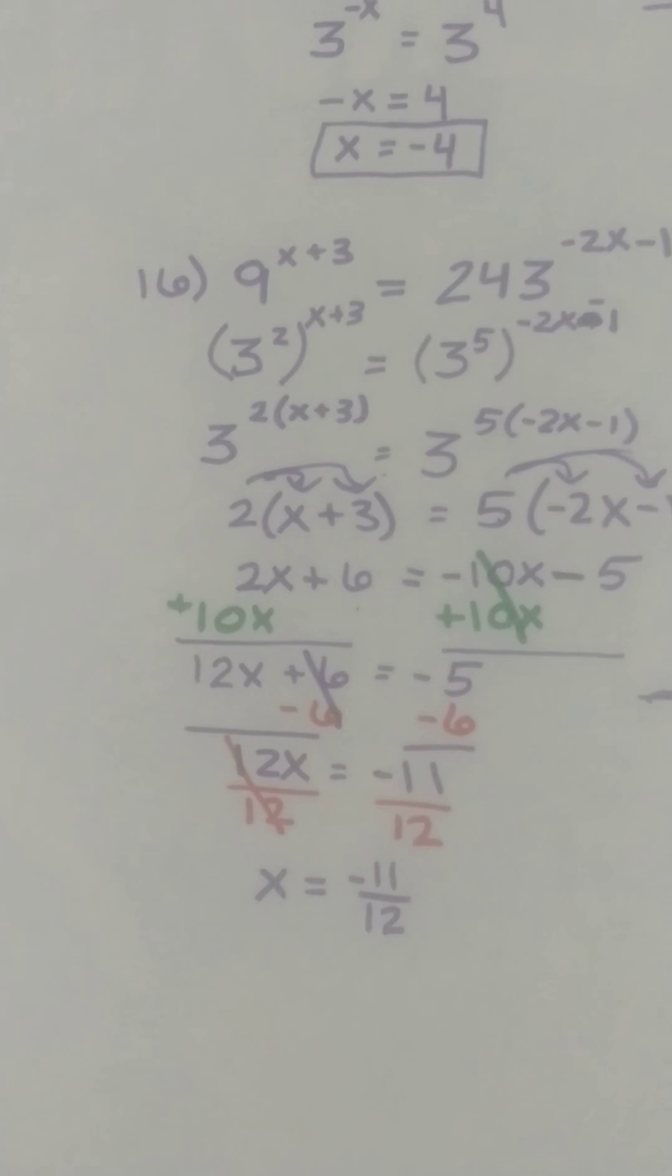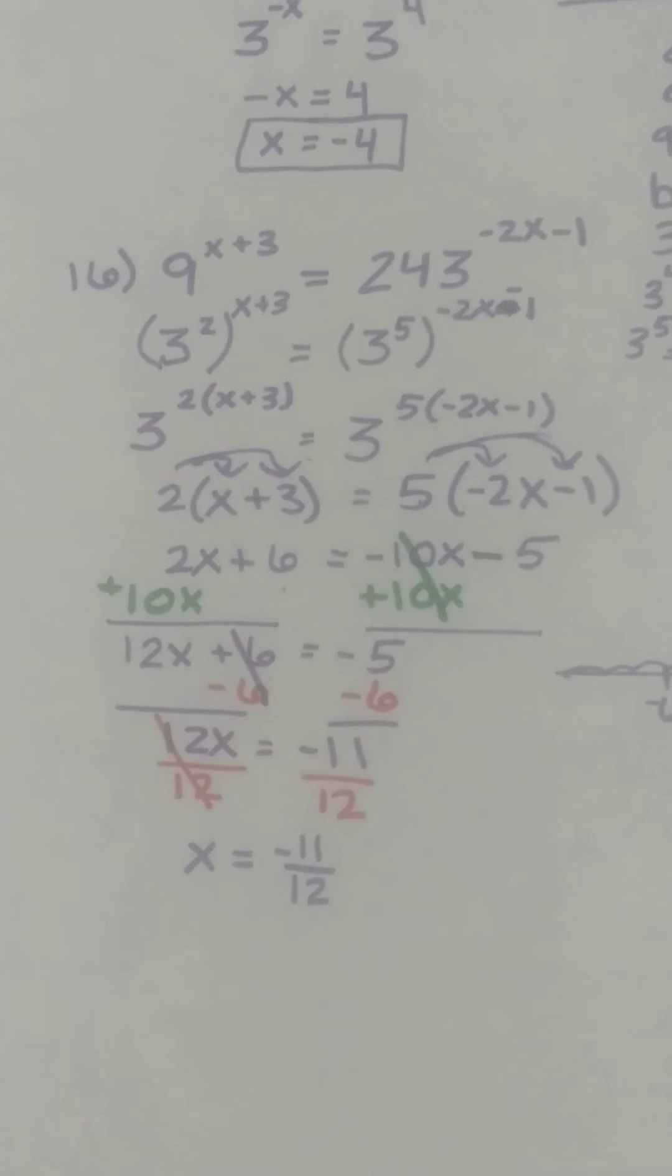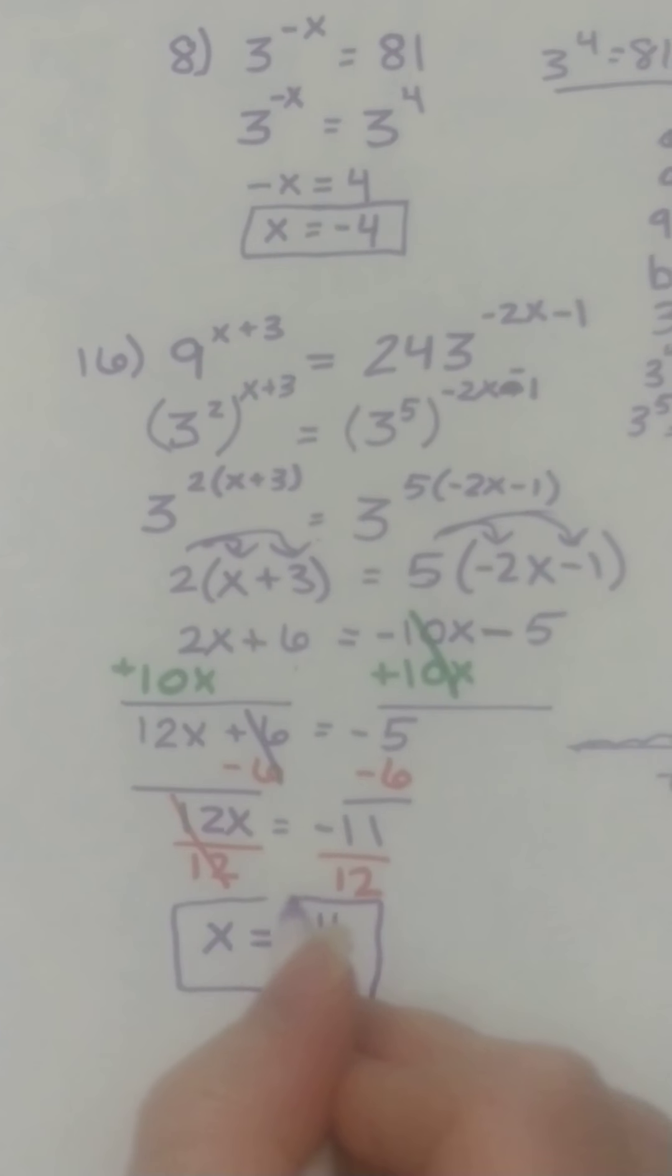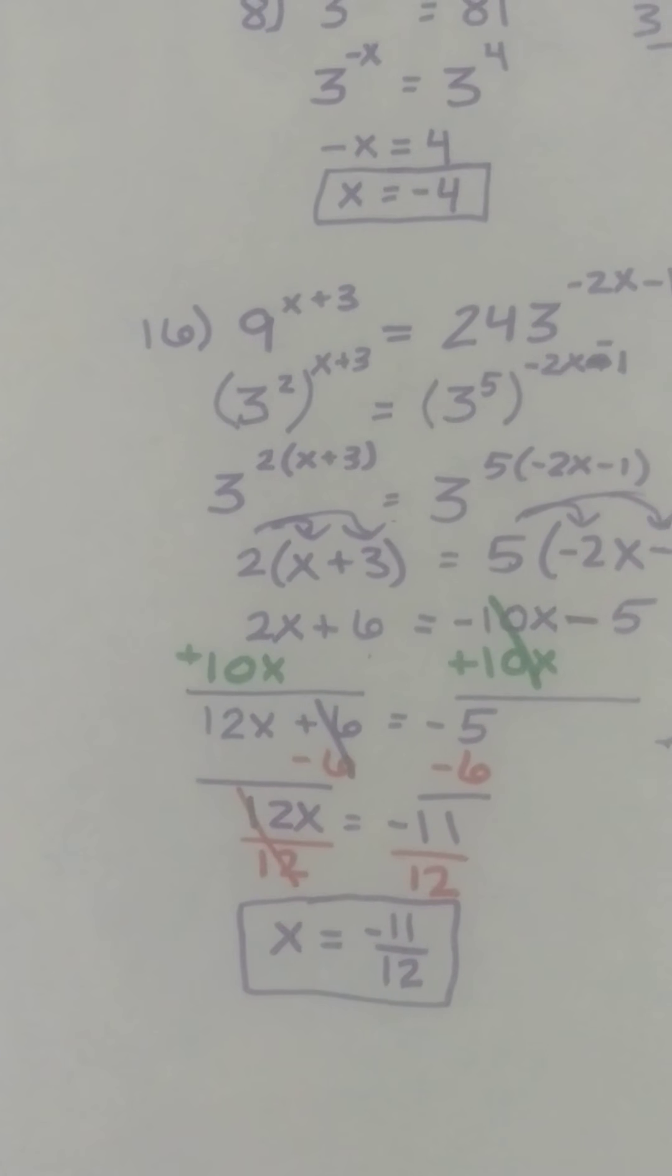And can that be reduced? My trusty camera woman shakes her head. So x equals negative 11 over 12.